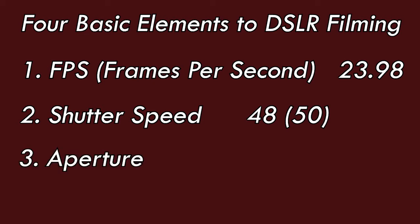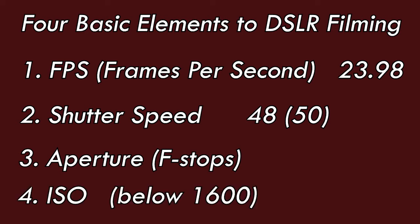Aperture, measured in f-stops: when you're using f-stops, make sure to keep it low for more light and items close up, and keep it higher for less light and items that are further away. ISO: try to keep it below 1600, and remember the higher the ISO, the grainier the picture. And there you have it — take your cameras, put them in manual mode, and get yourself out there filming.